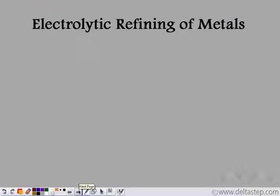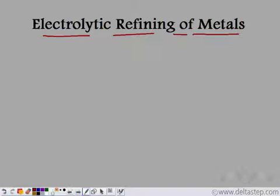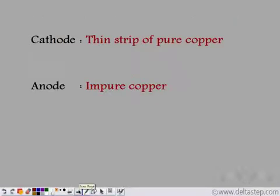This process — the electrolysis of a solution using active electrodes — can be used as one very important application of electrolysis in the modern day: the electrolytic refining of metals. To refine copper, we take thin strips of pure copper as the cathode and use impure copper as the anode.